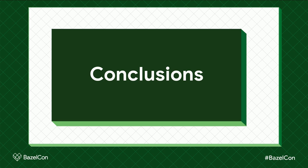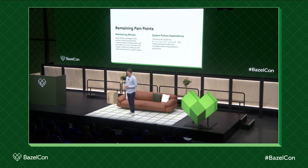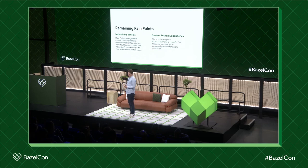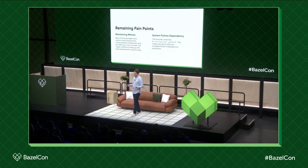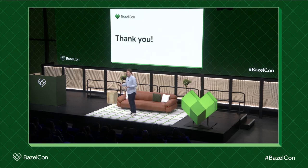We have a couple of remaining pain points. One is that we need to maintain a separate internal wheel repository to make everything work — this isn't really a Bazel problem, it's a Python packaging problem in general, but it is a bit painful. The other is that the launcher script still has a dependency on the system Python via a Python 3 shebang, which means our Docker images all have to ship two Python interpreters, which isn't great. But other than that it's been working pretty well. And that's all I had — thank you.